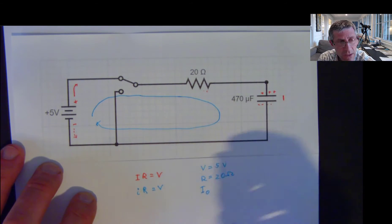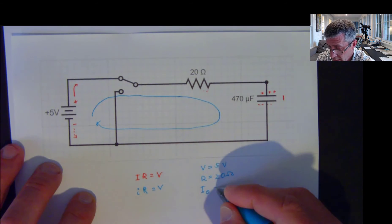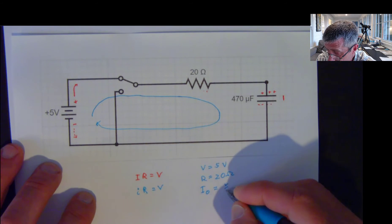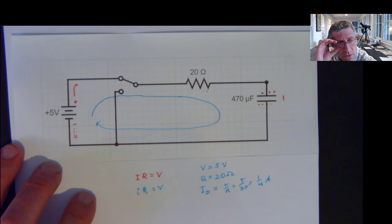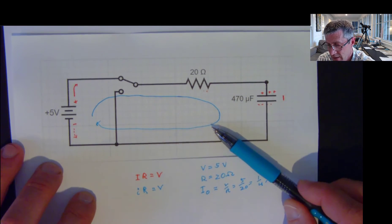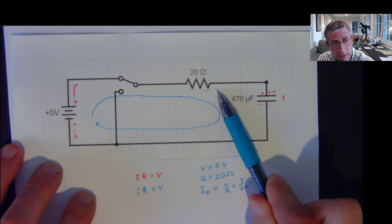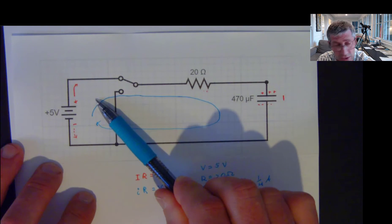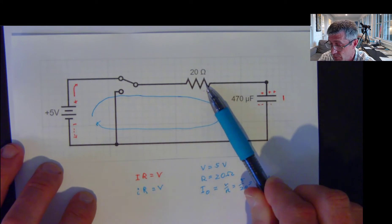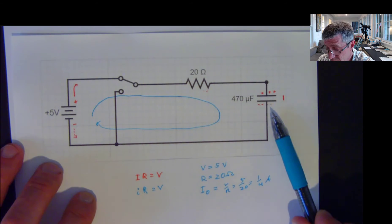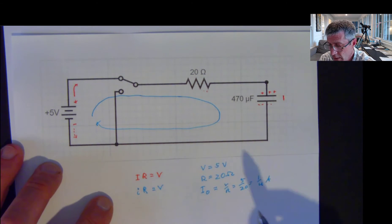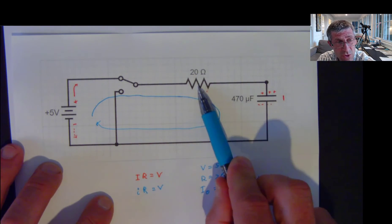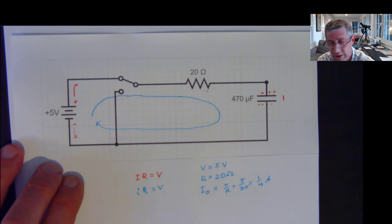I can calculate the initial current. So my initial current that passes through that resistor is just going to be V over R — 5 over 20 — which is one quarter of an amp. My last charge that passes through, after it's come to steady state, I no longer have current. But my loop rule is still true. So I have a voltage gain of 5 volts going across here. There's no current, so I have no voltage drop in the resistor. But now my capacitor is behaving like a fully charged capacitor — I have a voltage drop across my capacitor.